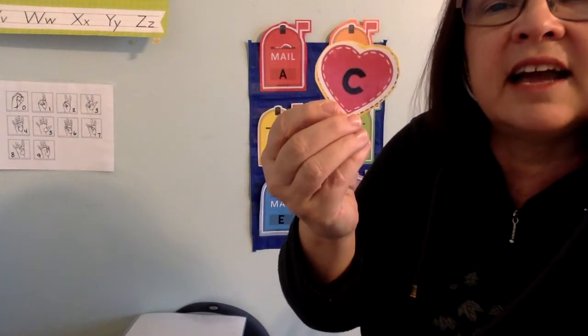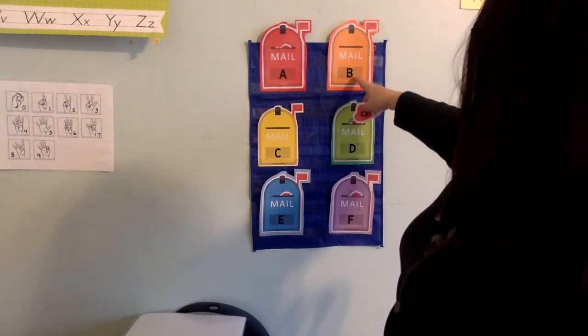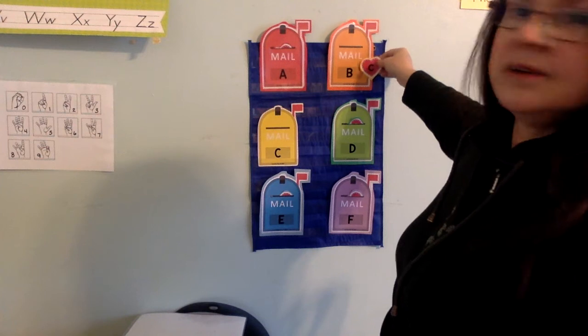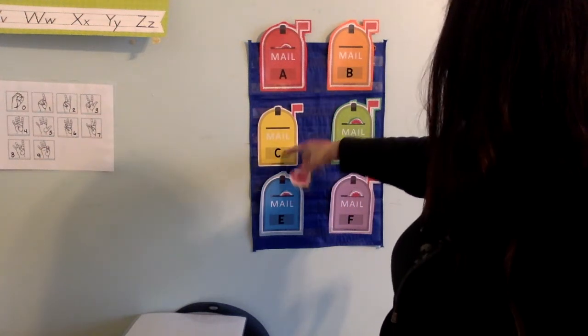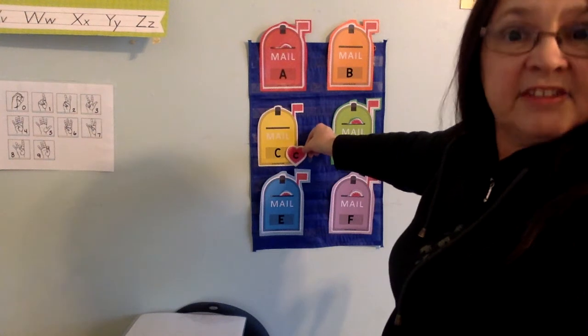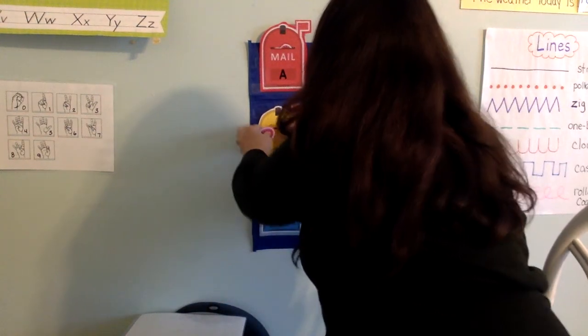Alright, let's see. What letter is that? C. Right, C. And it makes the C sound. That's right, that's the uppercase C and the lowercase C. And they look alike, right? But one is smaller than the other. Very good, it's in the yellow mailbox.